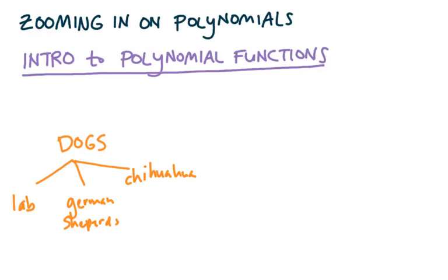So in the same way, functions can be thought of as the big picture here, like the dogs, and then functions break down into other classes. So we could say polynomial, we could say another kind we'll learn about soon will be rational,